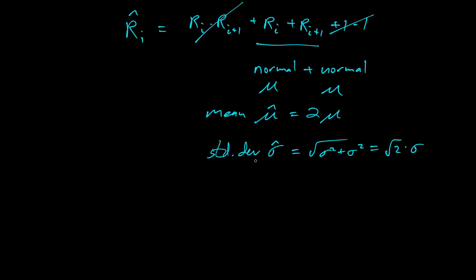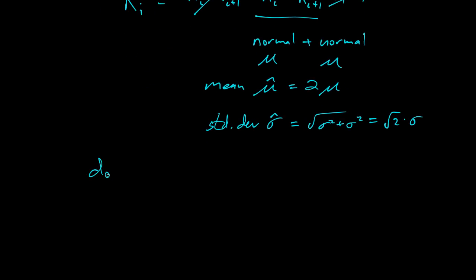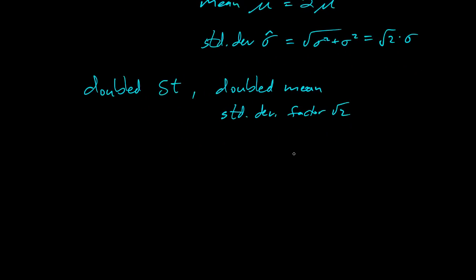So what happened? We doubled delta t. And that doubled the mean. And multiplied the standard deviation by a factor of root 2. And so we can think, what's our model? So now we have a discrete model.